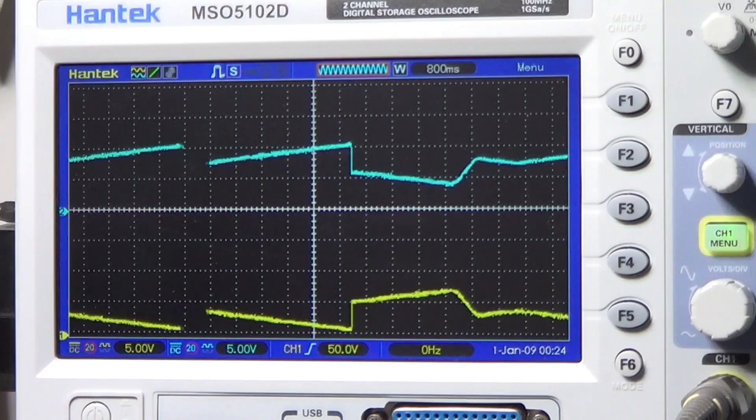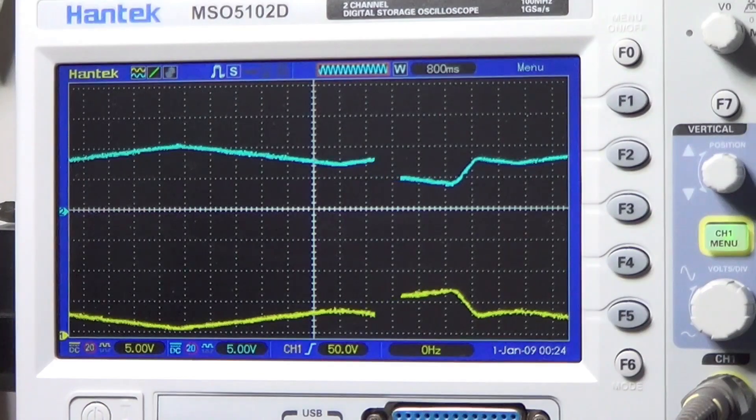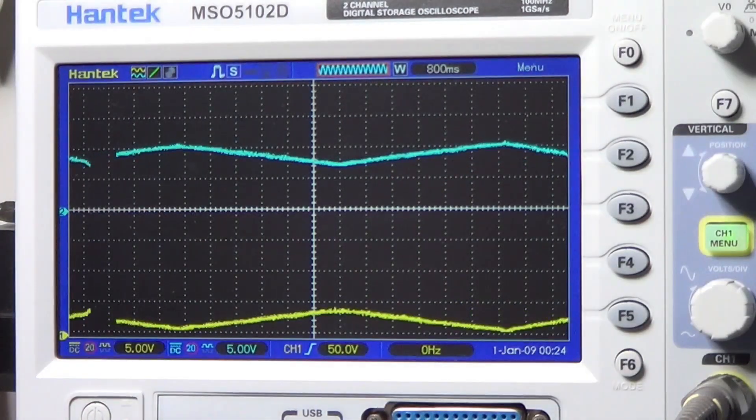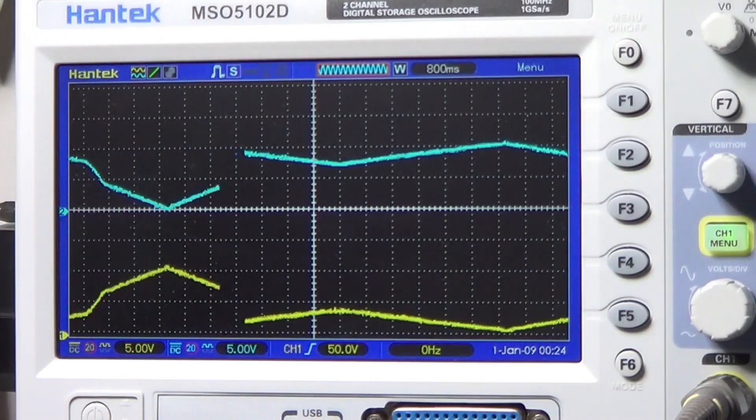And you can see the effect on the oscilloscope, which now shows the sum of the two signals weighted according to the selected levels. If I now remove entirely the square wave, setting to zero its level, we should see only the triangular wave. And there it is. Let's increase its level to the maximum. And now we can see the triangular wave to its full extent.